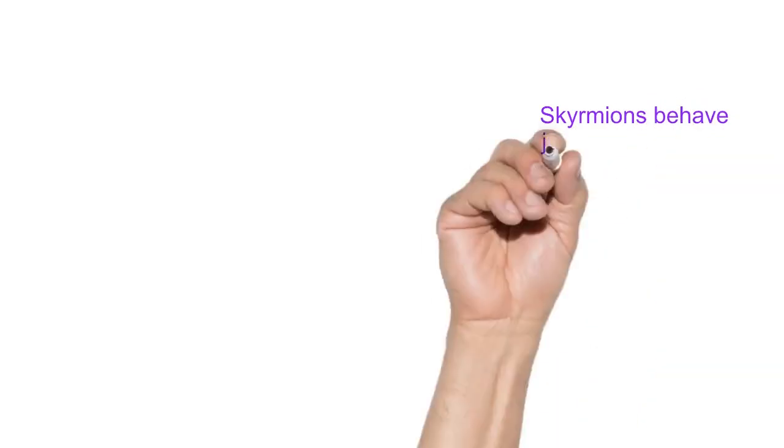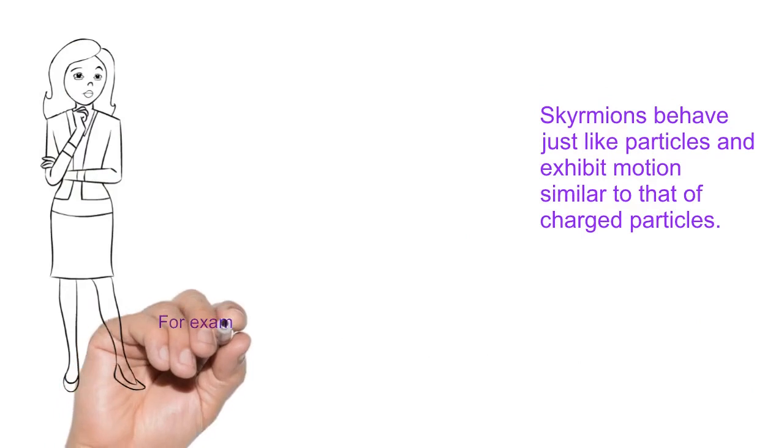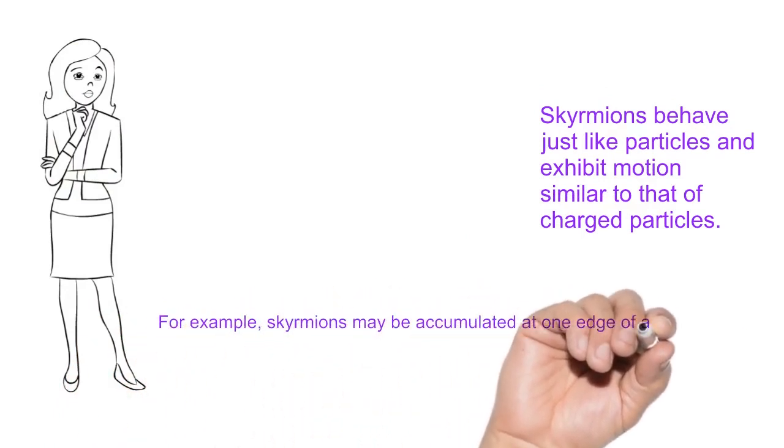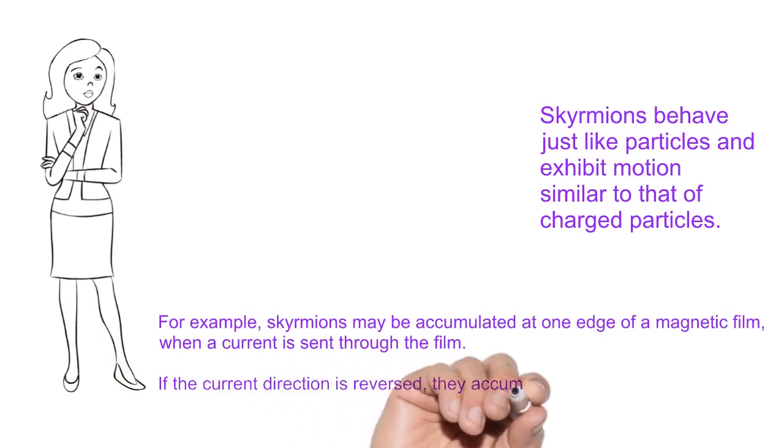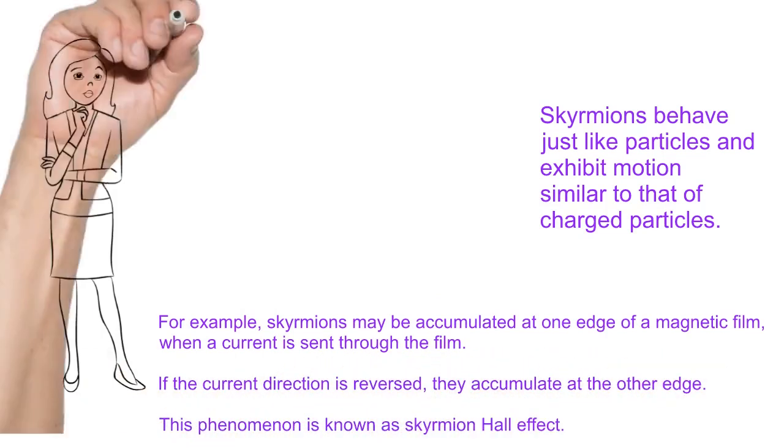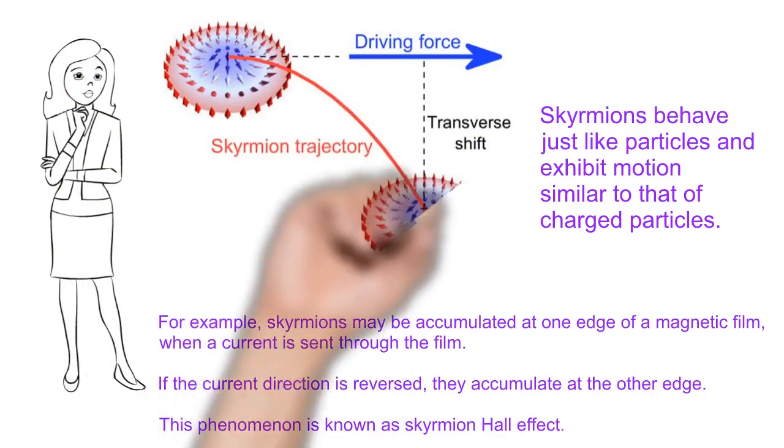Skyrmions behave just like particles and exhibit motions similar to that of charged particles. For example, skyrmions may be accumulated at one edge of a magnetic film when current is sent through the film. When the current direction is reversed, they accumulate at the other edge. This phenomenon is known as skyrmion Hall effect.